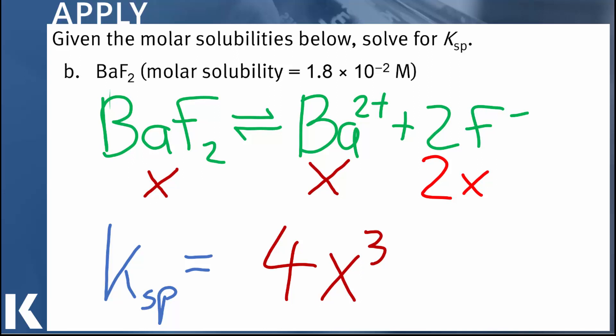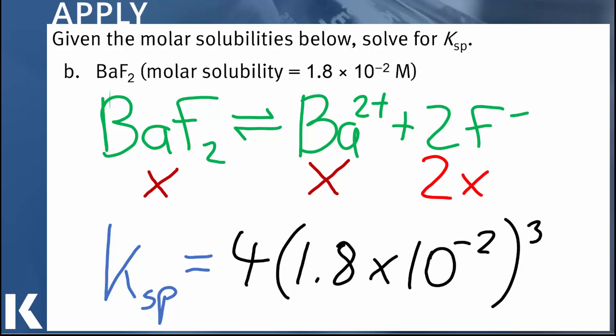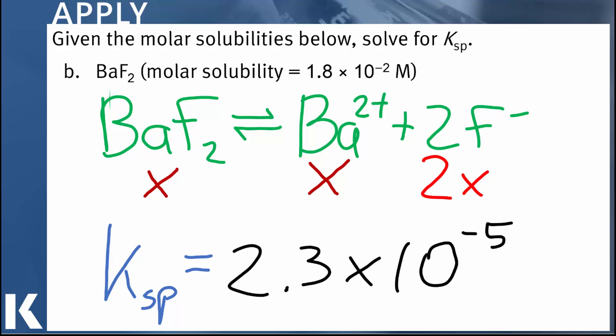Now if we take the specific value of molar solubility in this case and substitute it for X, we just have to carry out that arithmetic. And here's how it looks. So there's 4 times the cube of the molar solubility. So make that calculation, and we find that the Ksp equals 2.3 times 10 to the minus fifth.